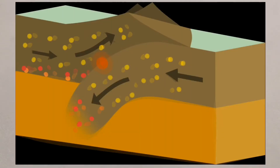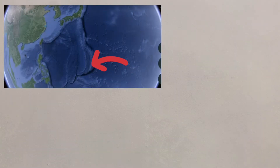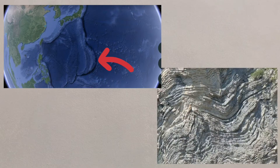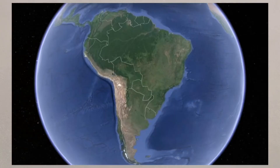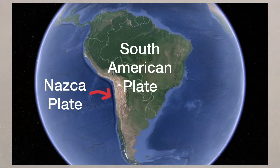At destructive margins, the plates move towards each other. At these margins, you can find deep ocean trenches and fold mountains. A great example is off the west coast of South America, where the dense oceanic Nazca Plate is subducted by the less dense continental South American Plate.